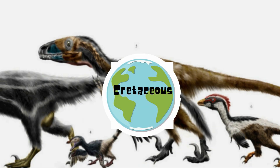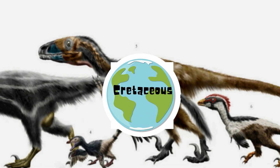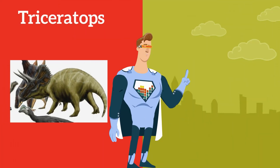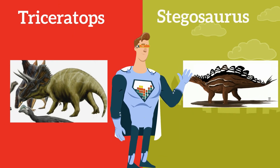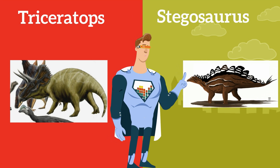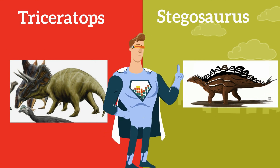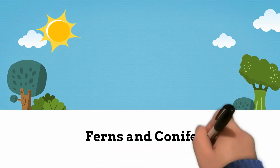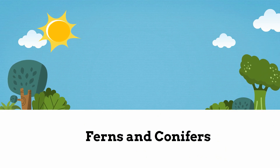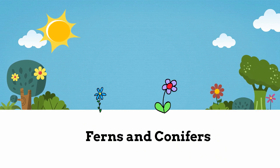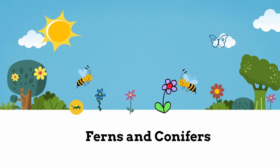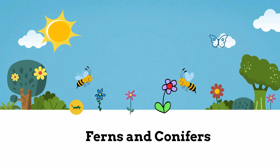This time period is most famous for the dinosaurs that roamed the earth. Dinosaurs like the Triceratops and Stegosaurus prospered during this time. The land was covered with ferns and conifers along with flowering plants. In addition, insects like bees and grasshoppers along with mammals were found throughout the earth.